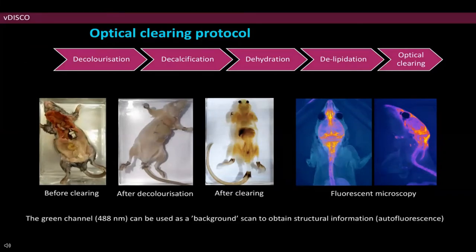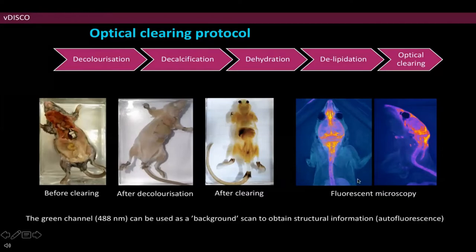We also see how the green channel—the 488 channel—can be used to obtain structural information. It has higher background than the other channels, which can be a pain if your fluorophore of interest is in the green spectrum. But if not, it's very good to get the whole structure.